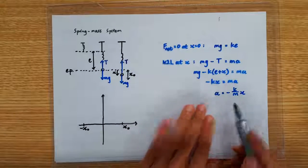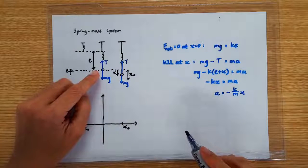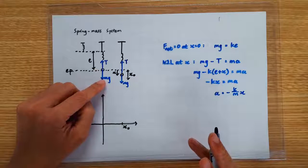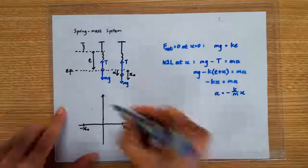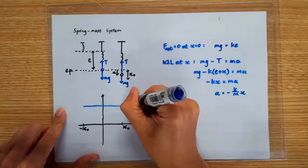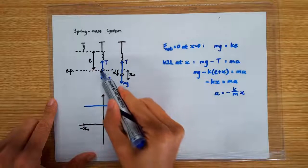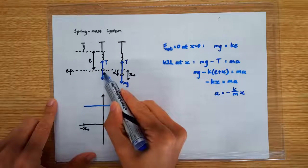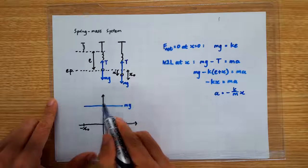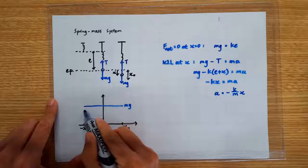Actually, in hindsight, this fact is quite obvious because in a spring-mass system, the mass is subjected to only two forces: the weight and the tension. The weight is constant at whatever displacement, whereas the tension is larger when it's below the equilibrium position and smaller when it's above. And we know that the spring force varies linearly with distance.